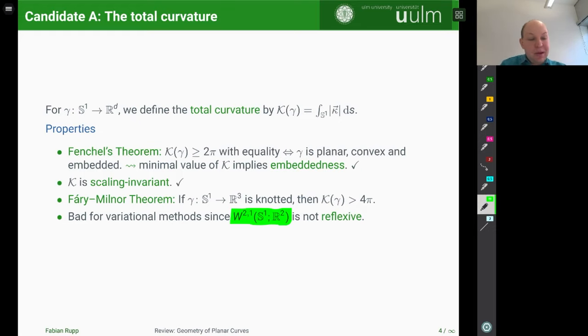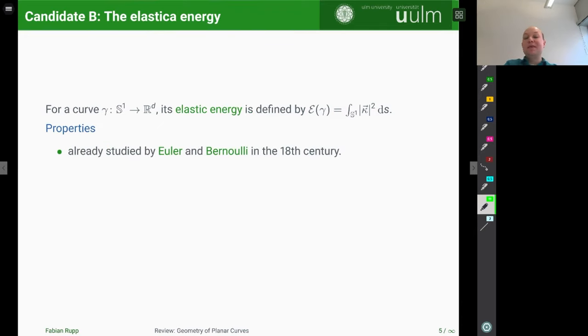This is maybe a motivation to introduce another candidate, namely the elastic energy, which is defined in a similar fashion. But now we take the integral where we raise the length of the curvature vector to the power 2. So this is the elastic energy. And this is a very classical energy to measure the bending of a curve which was already studied by Euler and Bernoulli in the 18th century and which is used in elasticity theory, for instance.